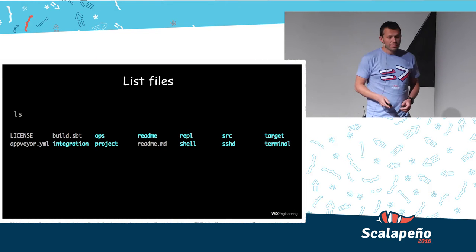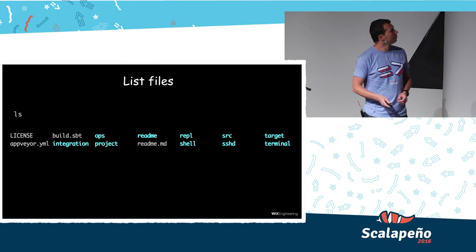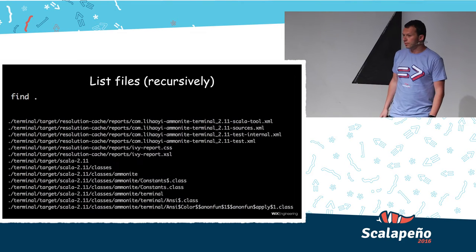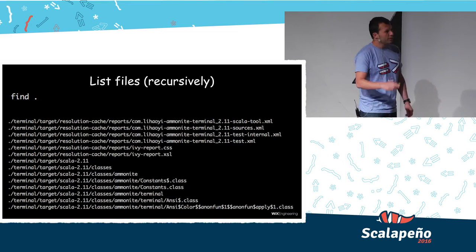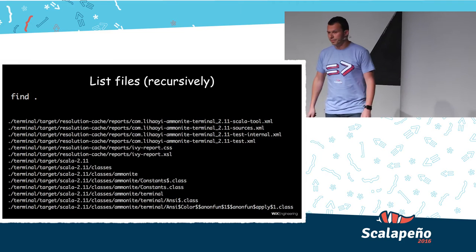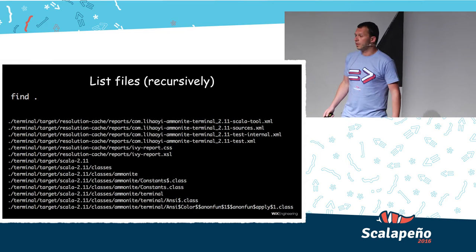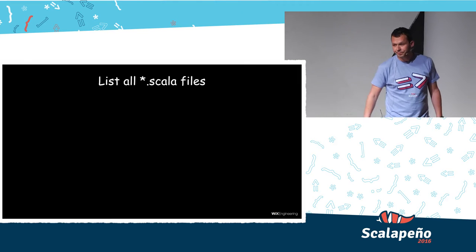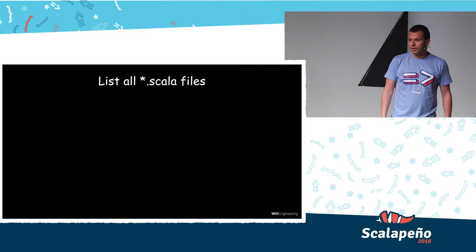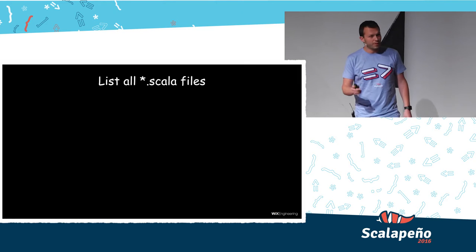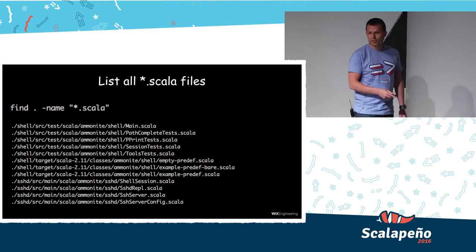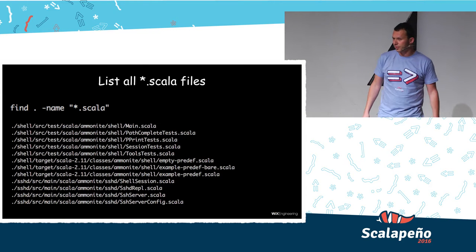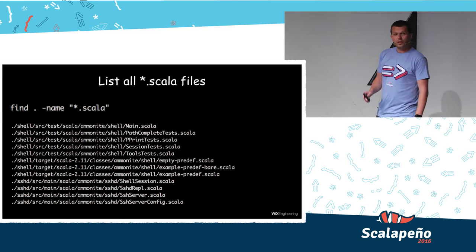To do stuff like list files, it's very simple — all you need to do is ls. To list files recursively, it's also pretty straightforward, just with the find command. But what about listing all Scala files recursively? If you know how to do it, it's not a big problem. You need to use find with a minus-name argument and provide it with a regular expression to match on the name.